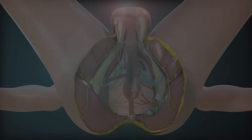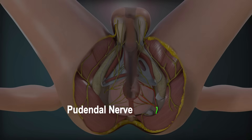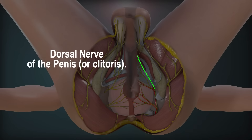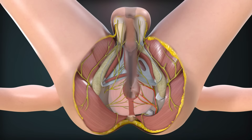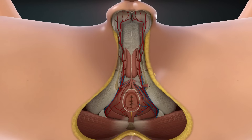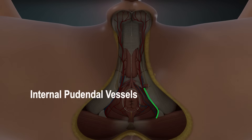Contents of the pudendal canal: the pudendal nerve, which divides within the canal into the dorsal nerve of penis and the perineal nerve; and the internal pudendal vessels.